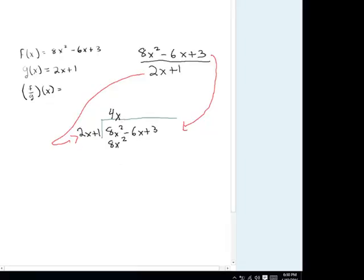Now, the rest sort of falls into place. You then take the 4x times the 1. So 4x times 2x, 4x times 1. We take 4x times 1, which is positive 4x.